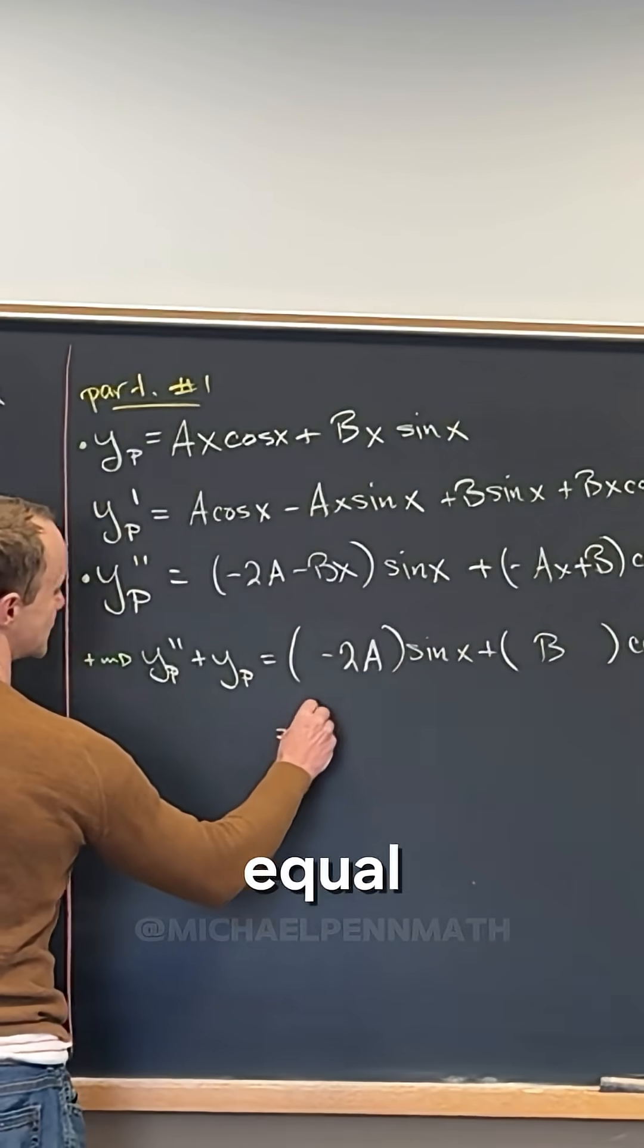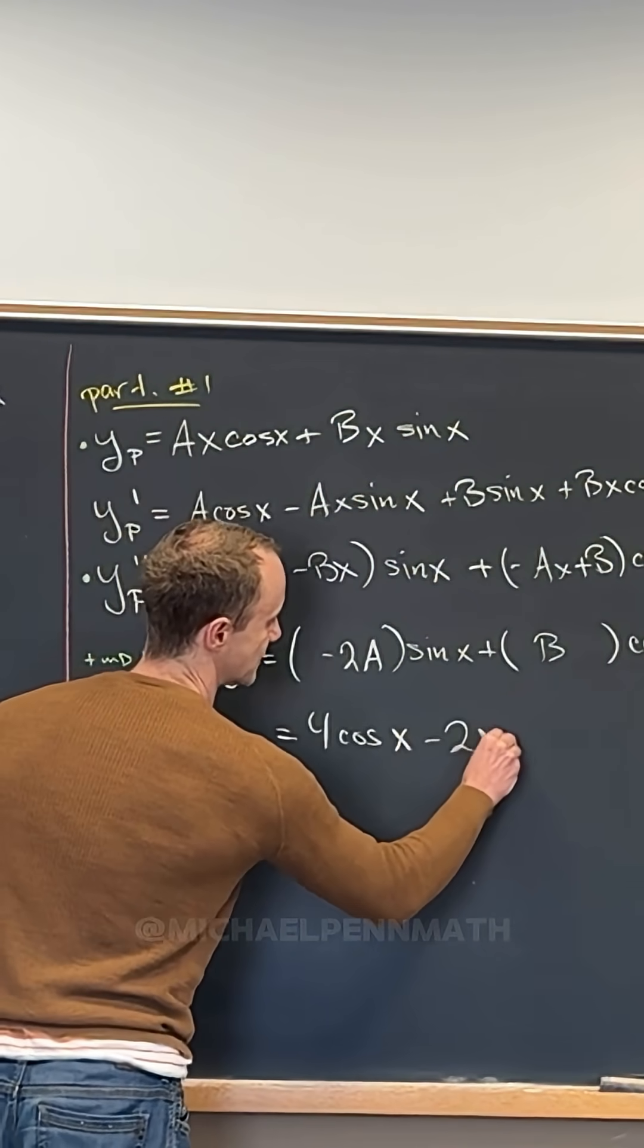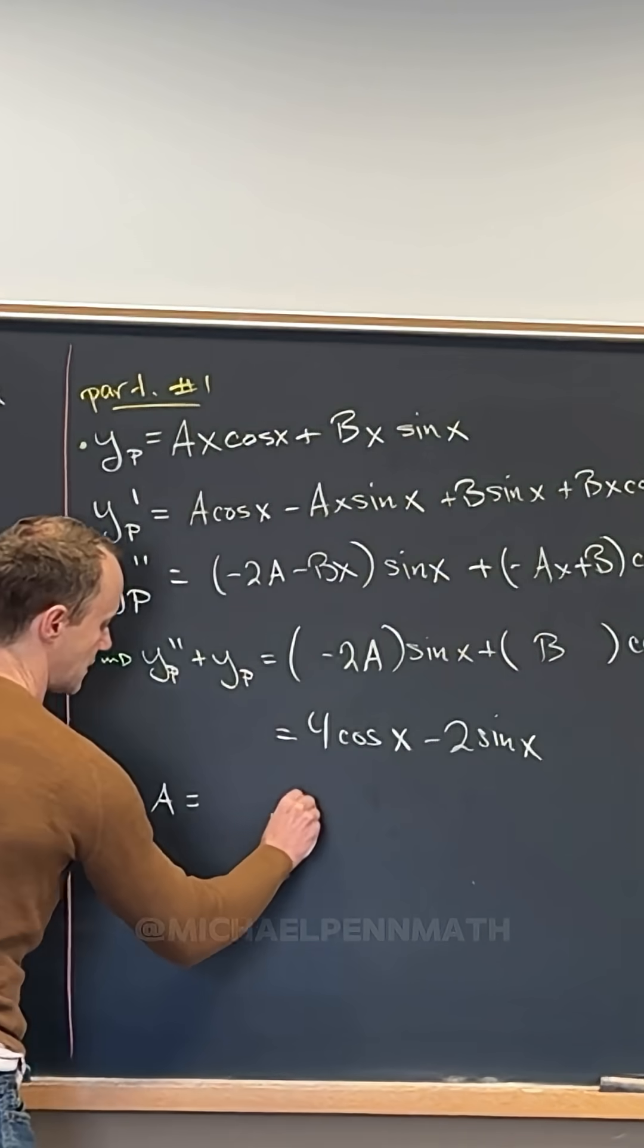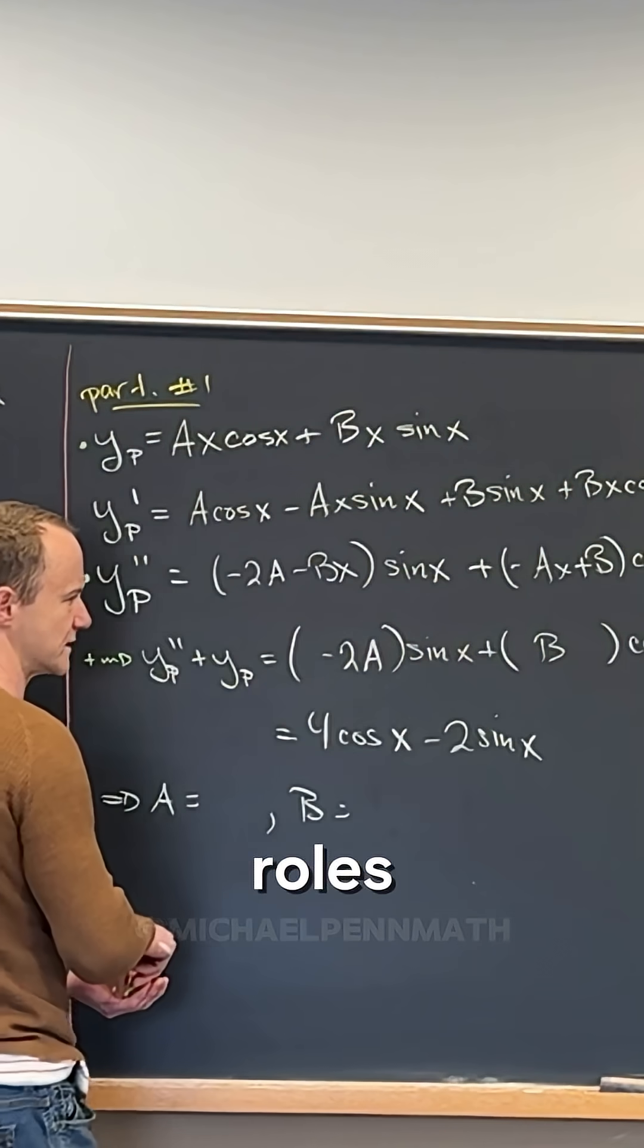We want this to be equal to 4 cos x minus 2 sine x. But what does that tell you about a and b? Yeah, careful about the roles here.